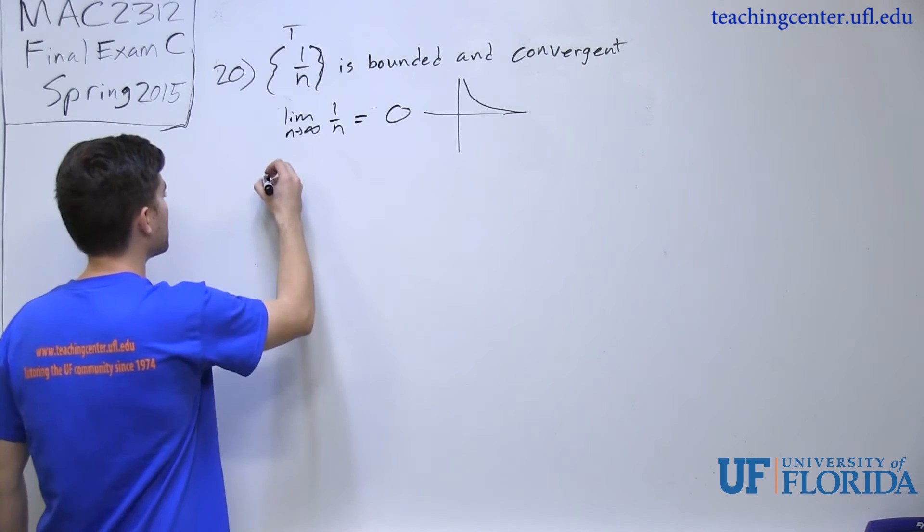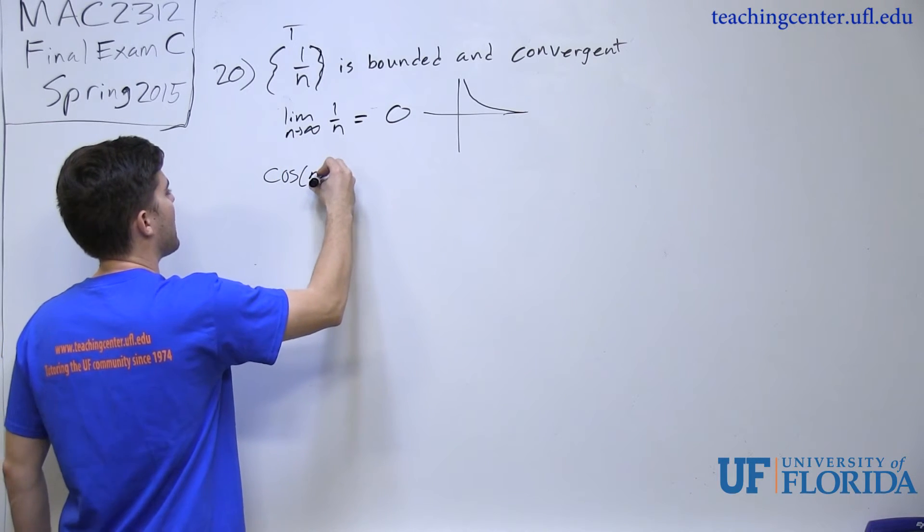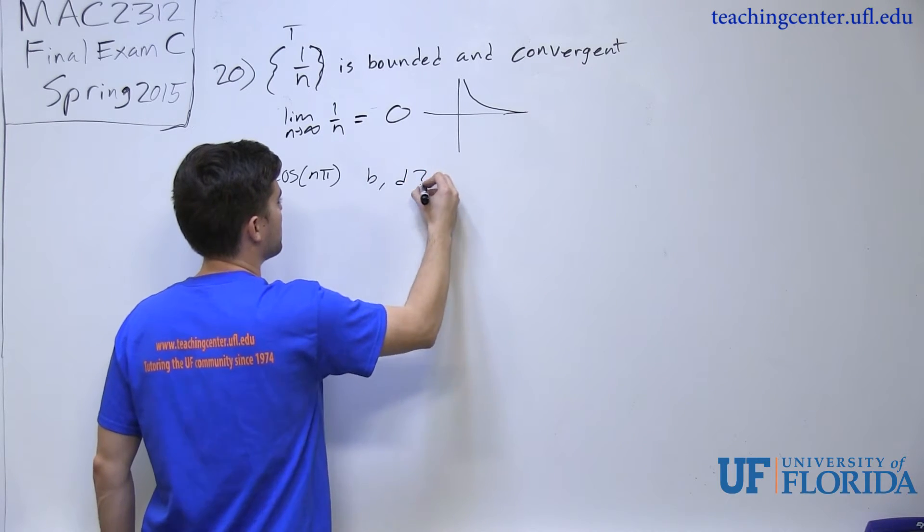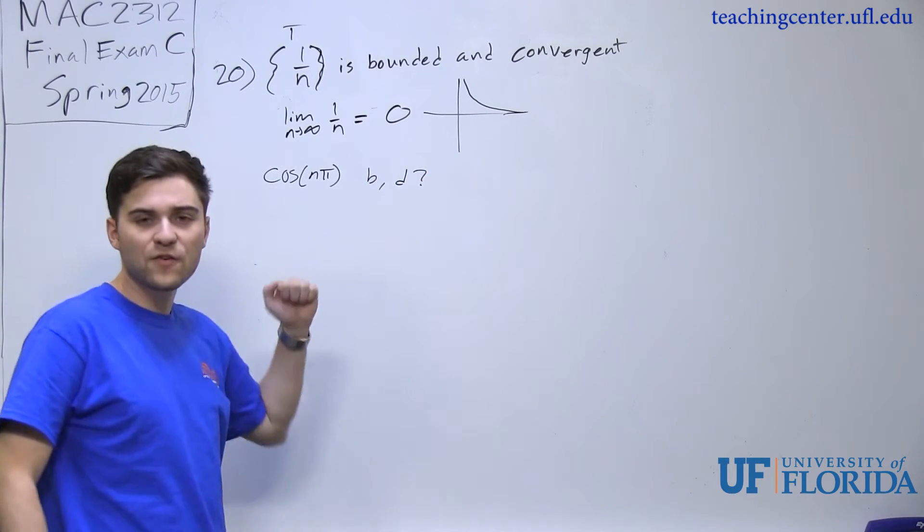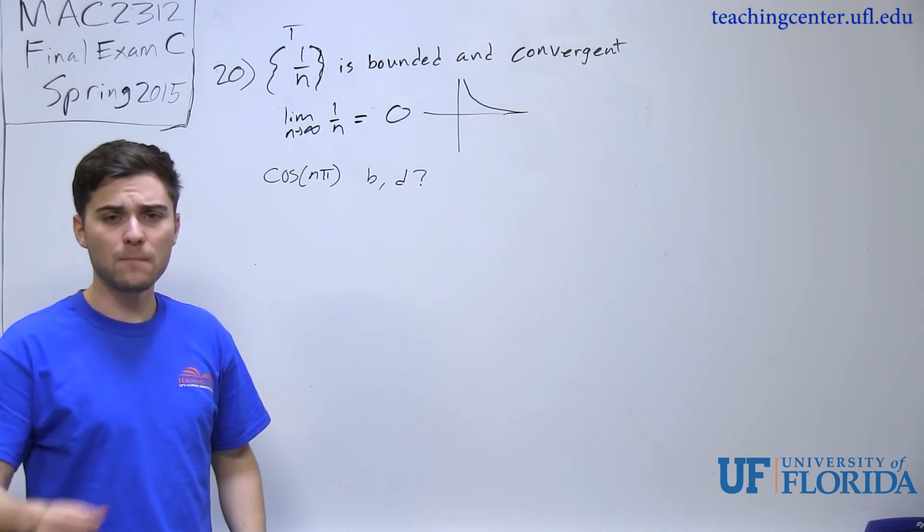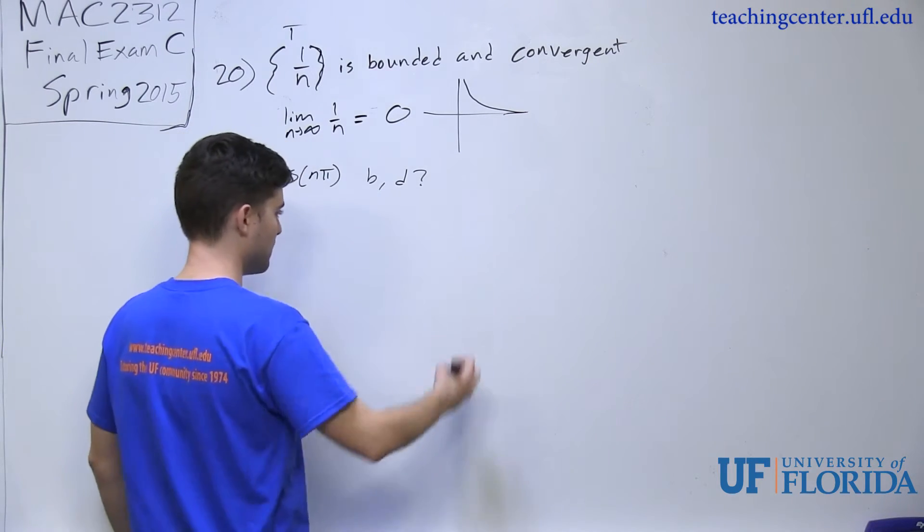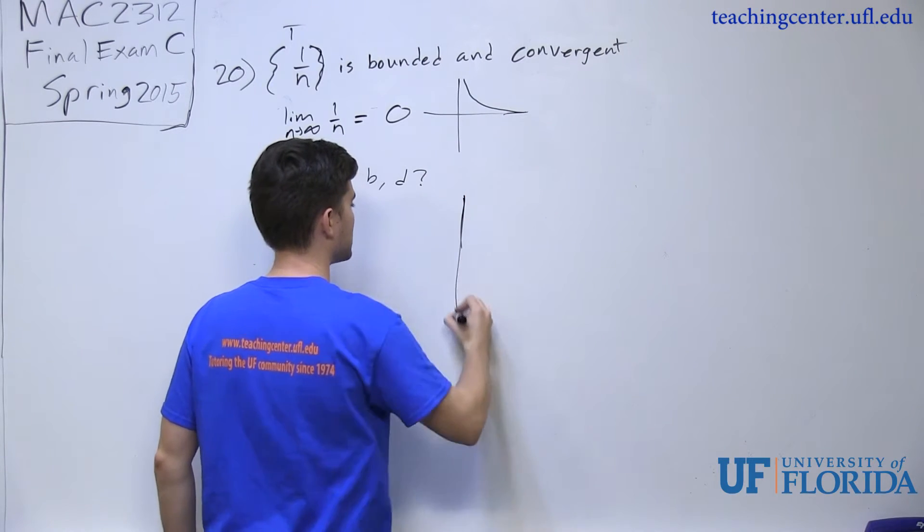The next one is cosine of n pi is bounded and divergent. So bounded and divergent. So when I am looking for divergence of this, remember if I take the limit as n approaches infinity, it should come out to a finite number. But in this case it actually does not.